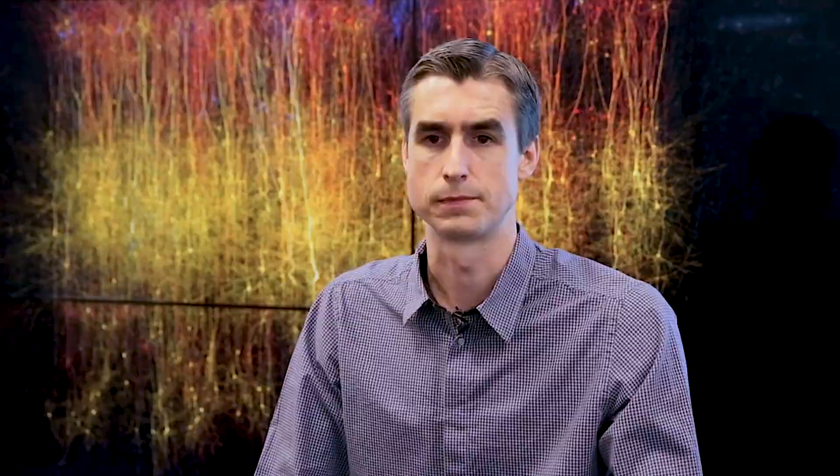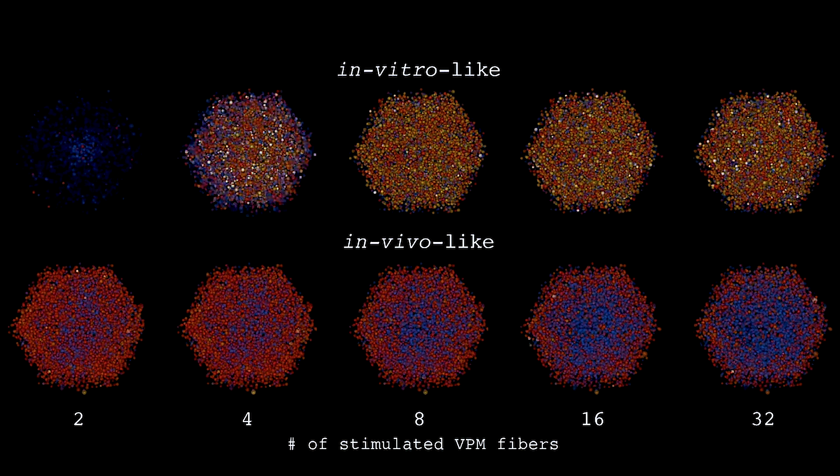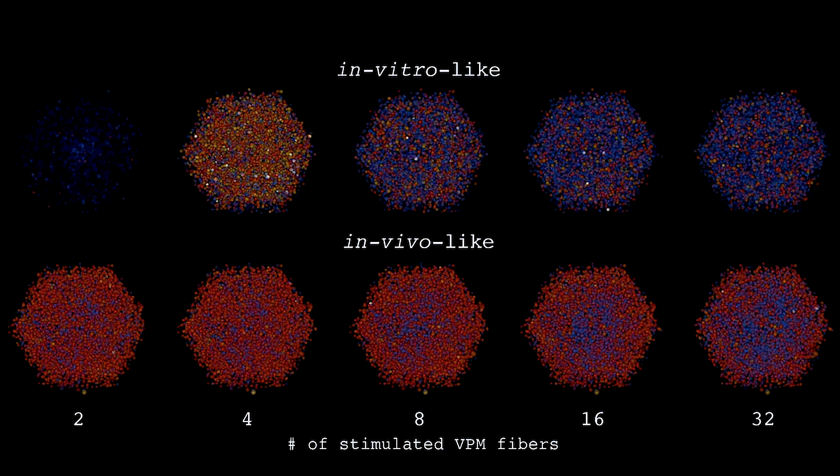A satisfying outcome of this work has been the finding that the reconstruction exhibits emergent properties consistent with an array of in vitro and in vivo experiments without specific parameter tuning. The transparency of the digital representation allowed us to analyze and understand the mechanisms behind these emergent properties. We found that modulation of calcium played a fundamental role in determining network state — in particular, a sharp transition between synchronous and asynchronous states that was calcium-mediated, at which the circuit has very interesting computational properties.